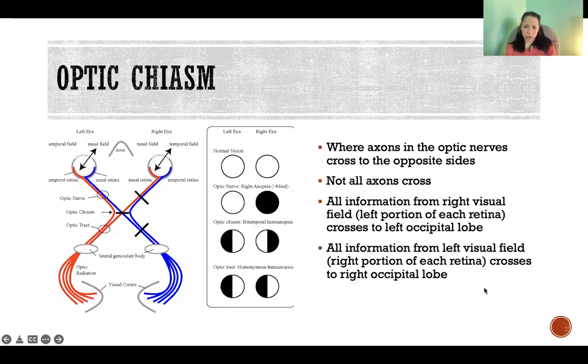So here's the optic chiasm. Here's what's actually happening. It's where the axons in the optic nerves cross to the opposite side before it goes back to the occipital lobe, as we just saw.